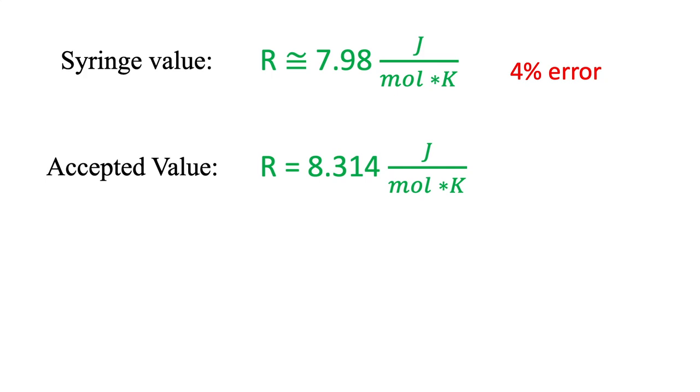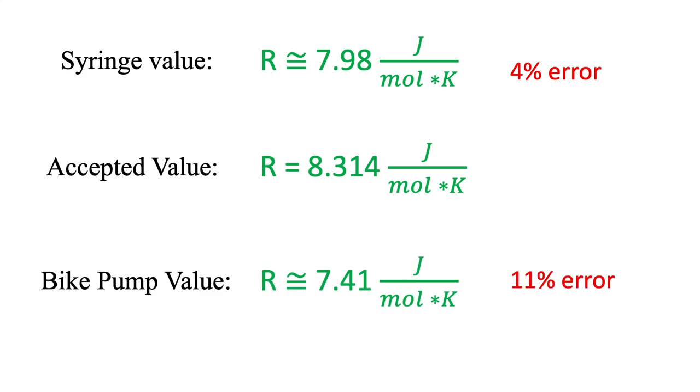You can do the same calculation for the bike pump data. We got 7.41 joules per mole kelvin. Which is not quite as close, but still pretty good.